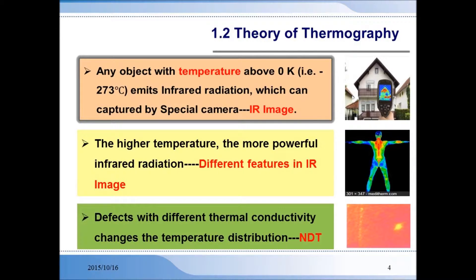The three main aspects of thermography are: firstly, any object with a temperature above zero Kelvin will emit infrared radiation that can be captured on an IR camera. The second is that areas of an object with different temperatures can be represented by the features of an IR image — the higher the temperature, the more powerful the infrared radiation. And lastly, the presence of defects can change the temperature distribution of tested objects due to different thermoconductivity.